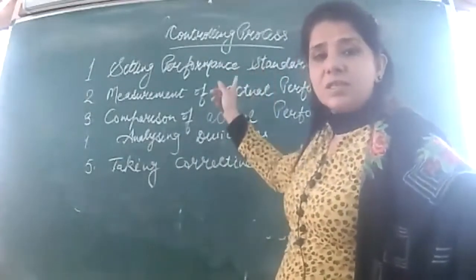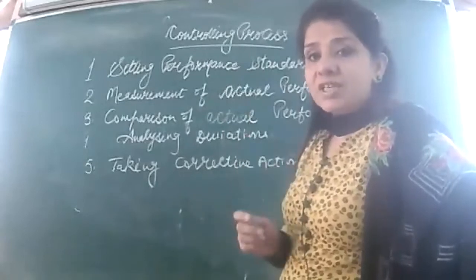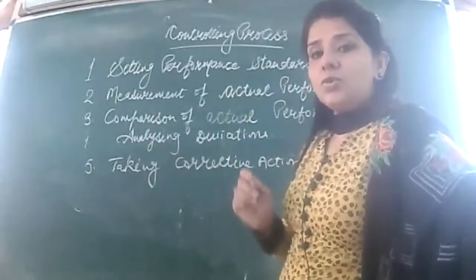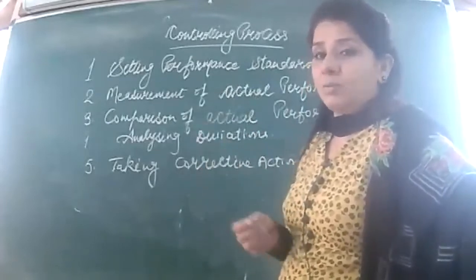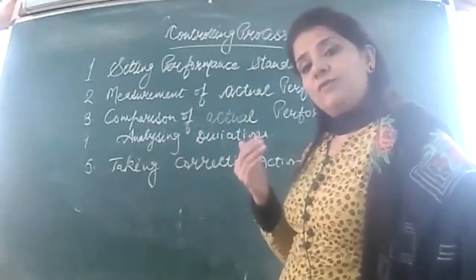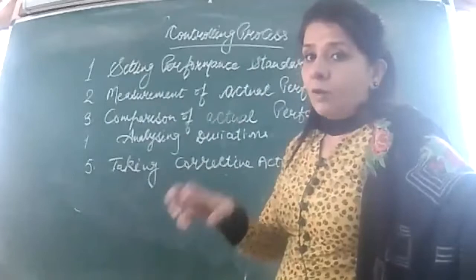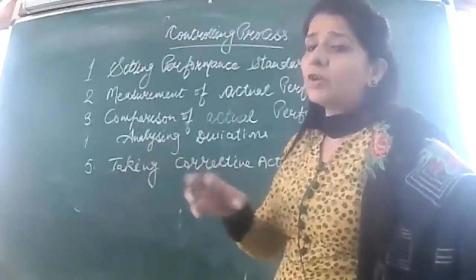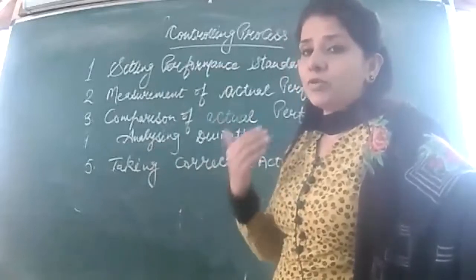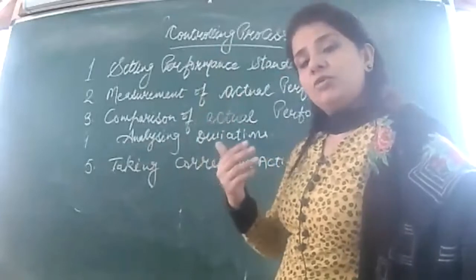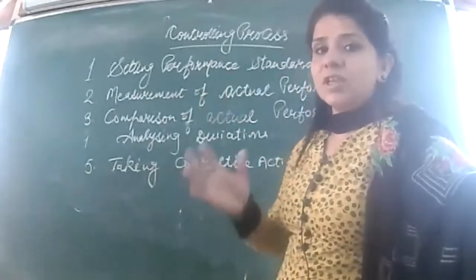We have a series of steps under this process. The first step is setting performance standards. You need to set the standard for the overall organization and tell it to each and every department. For example, if you are setting the objective for your production department, you will tell them quantity — how much they need to produce, what should be the quality, and what should be their cost of production. The target for cost is to reduce it, for units produced is to increase it, and for quality is to improve or maintain it.